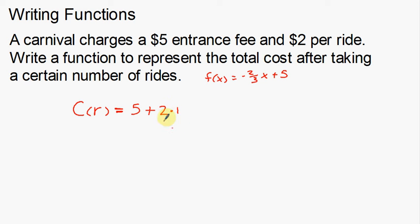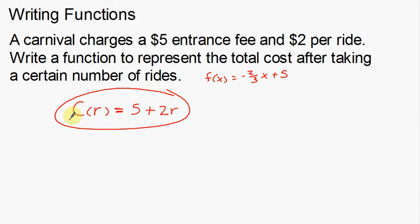If I have one ride, it's 2 times 1. Two rides, 2 times 2. Three rides, 2 times 3. Four rides, 2 times 4 — that's $8 plus the $5 to get in. Notice this number keeps varying, and that gives you an idea of where the variable goes: $2 per ride becomes 2R. So C of R equals 5 plus 2R. The cost is based on the number of rides: $5 to get in plus $2 per ride. That is how you write a function.